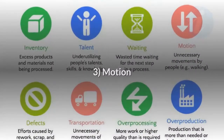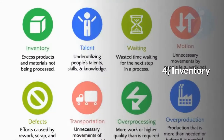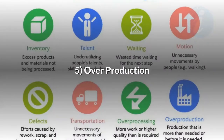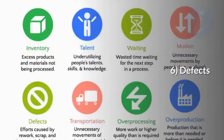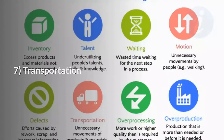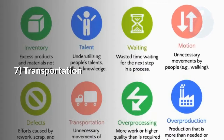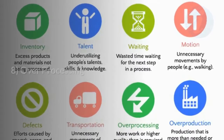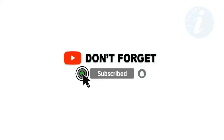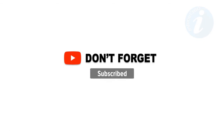The eight wastes in lean are: one, non-utilized talents (people); two, waiting; three, motion; four, inventory; five, overproduction; six, defects; seven, transportation; eight, over-processing. Thank you for watching this video — please subscribe, like, comment, and share with your friends and other contacts.